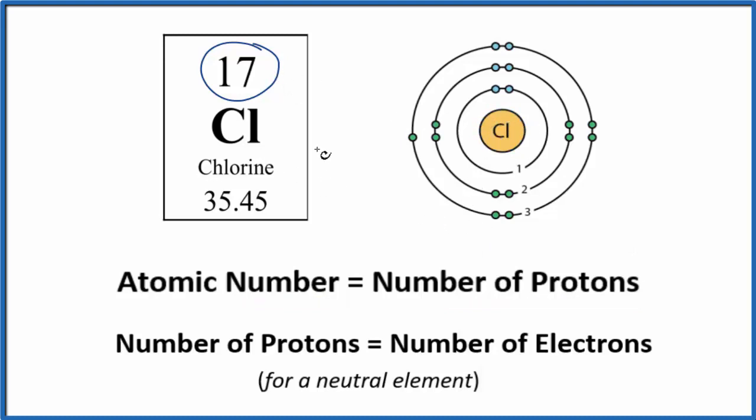Because chlorine is a neutral element, and all of the elements listed on the periodic table are listed as neutral, the number of protons equals the number of electrons. So we have 17 protons in the nucleus, and then in these energy levels here, we have 17 electrons around the nucleus.